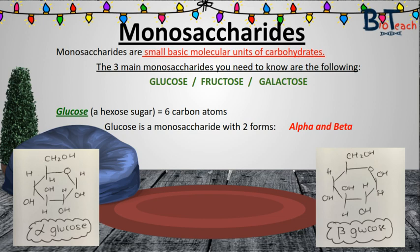The three main monosaccharides you need to know are glucose, fructose, and galactose. Monosaccharides can be classified by the number of carbon atoms they contain. Some important monosaccharides are hexoses, with six carbon atoms — for example, glucose. Some are pentoses, with five carbon atoms — for example, ribose or deoxyribose.